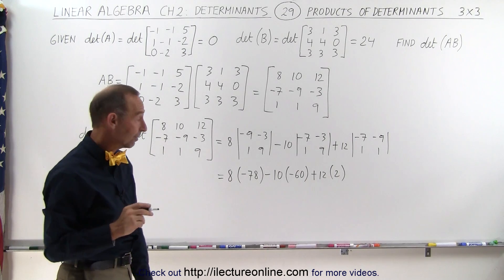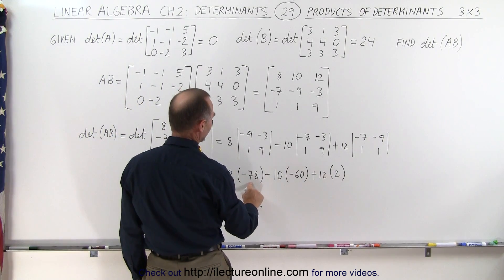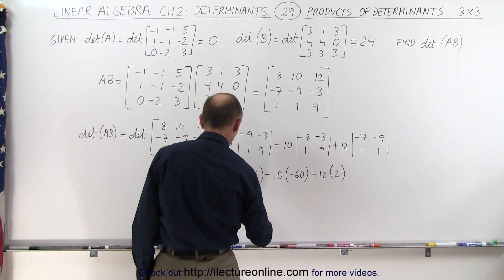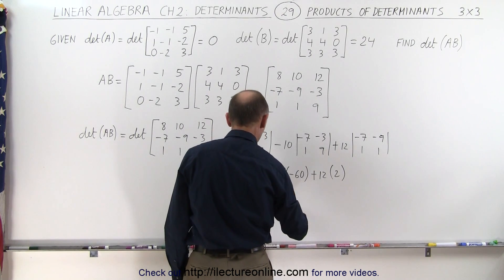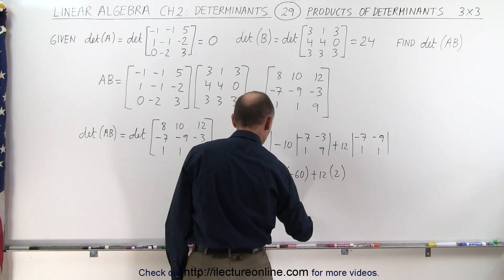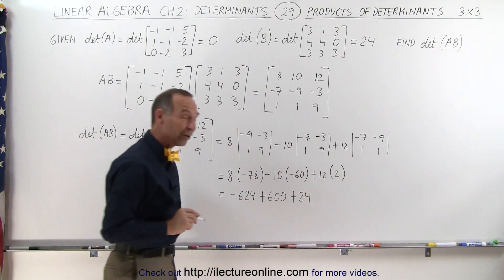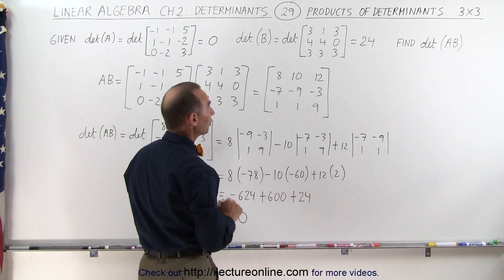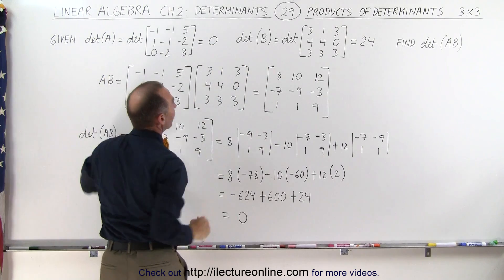Let's now simplify further. 8 times minus 78: well, 8 times 80 is 640, but minus 16, that would be minus 624. This times this gives us positive 600, and this times this gives us positive 24. When you add all those together, you indeed get 0, which is what we get when we multiply the determinant of A times the determinant of B.